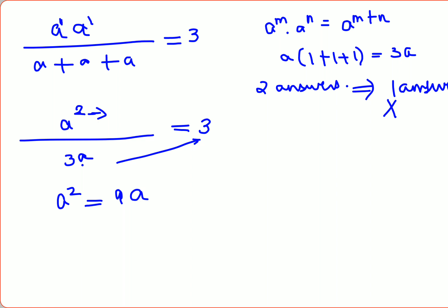Now here also, people will end up canceling this and this. No, no, no, you cannot do that. So what will happen is a squared minus 9a equals 0. You shift this 9a over there.